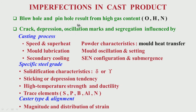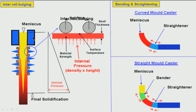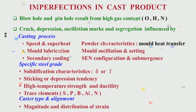Then we may have oscillation marks. Unlike ingot casting, the continuous casting mold is not stationary — this mold is oscillating, going up and down vertically continuously during continuous casting. It is necessary because otherwise there is a possibility of the shell getting stuck at the mold surface. So the mold must always oscillate; there is a frequency and an amplitude for the oscillation.